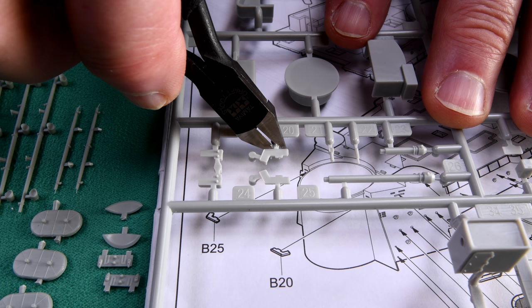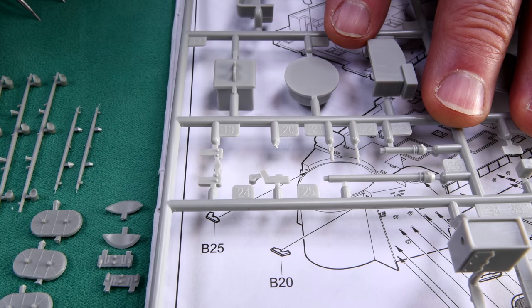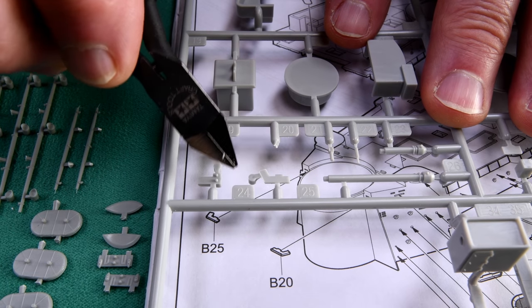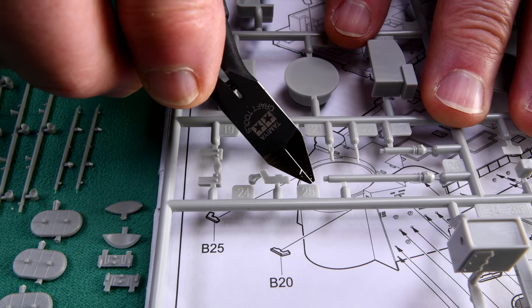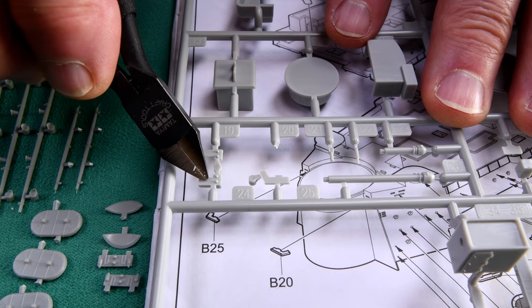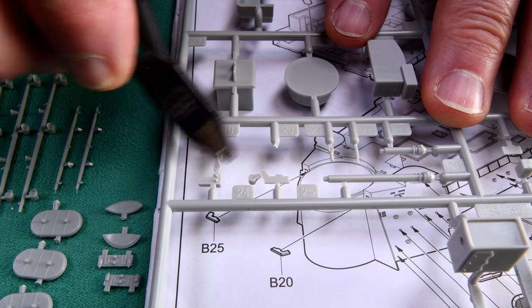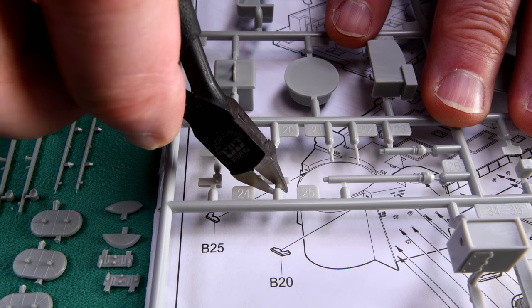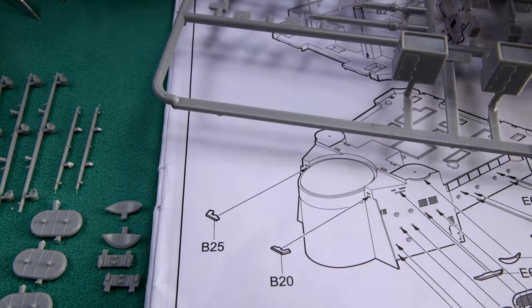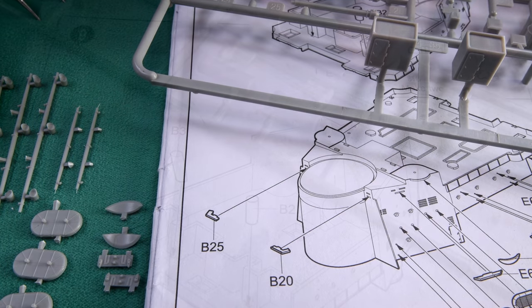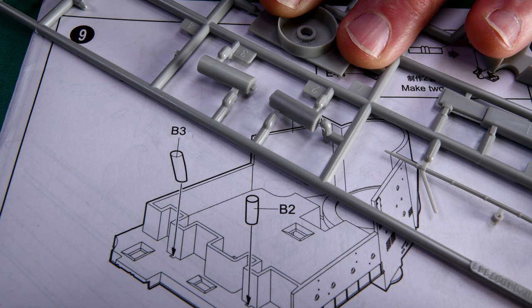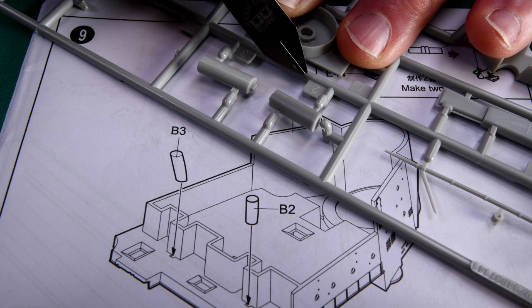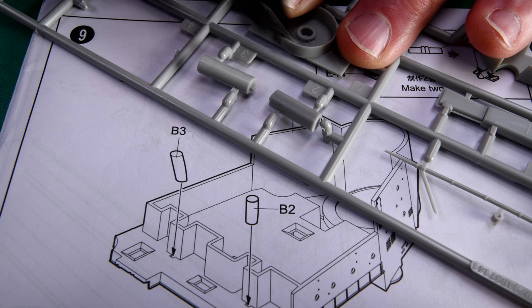Here we go. B20 and B25. See, it says 24, but this is obviously 25 because this has to be 24 here. So this one is 25. And here we go again, two pieces that are mirror image to each other. Unless they're flipped over, then they won't work. And we've got B2, B3.